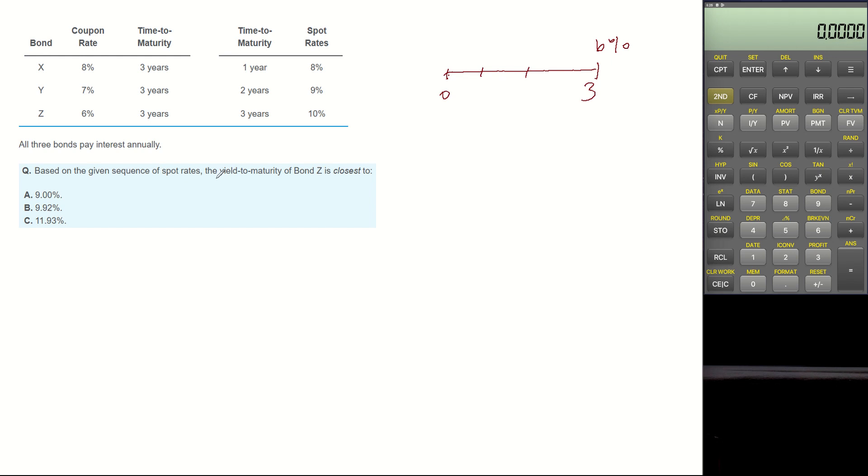To be able to answer for yield to maturity, we need to know the present value of the bond first. Present value of bond is the sum of discounted future cash flows.